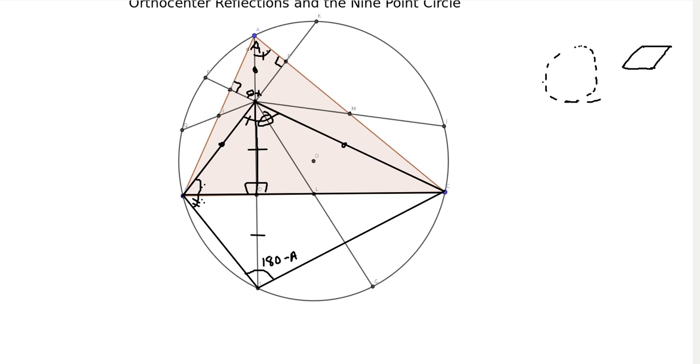But this angle right here is in a right triangle. Because there's a 90 degree angle here. So it's in a right triangle with this angle, which is C. This is angle C. So this is 90 minus C. So this is 90 minus C.